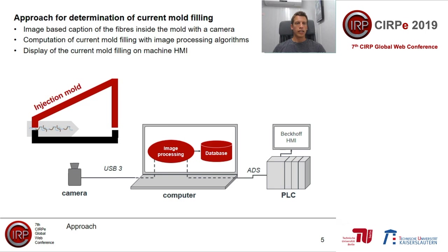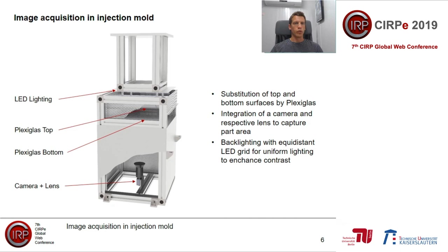We integrated a camera into an injection mold. The images from this camera are then sent to image processing software on a computer, which detects the fiber front and sends the results of the fiber front and the current mold filling state to the machine PLC, which displays the current state on the machine's HMI for the operator. We can see the injection mold here — we normally have the nozzle which blows in the fibers. We replaced the bottom and top of this mold with Plexiglas, so with the camera installed beneath the cavity we can look inside. On the opposite side, we have LED lighting to enhance contrast.